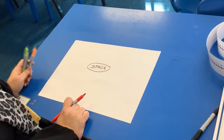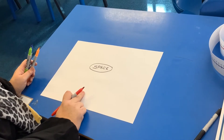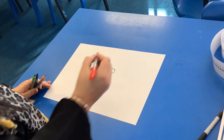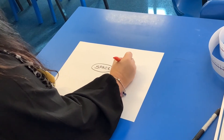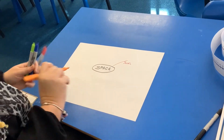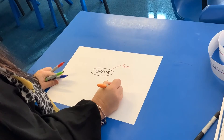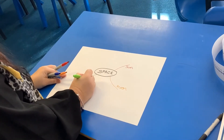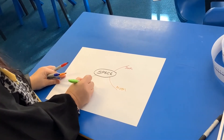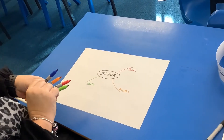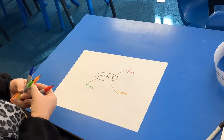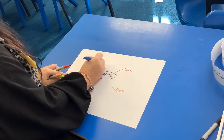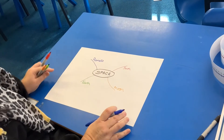Today we're going to start a science topic about space. Like when we start any topic, we're going to do a mind map. I think we're going to have four categories: a category called Sun, a category called Moon, and then let's have Planets.